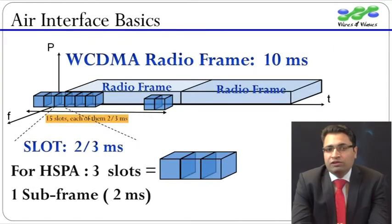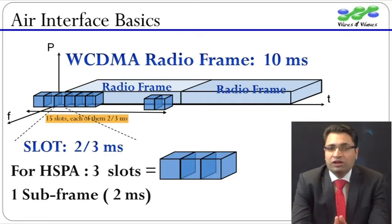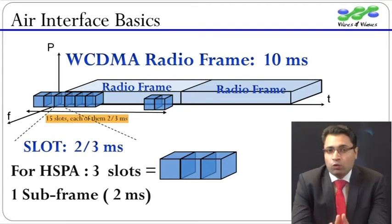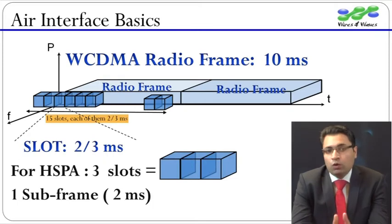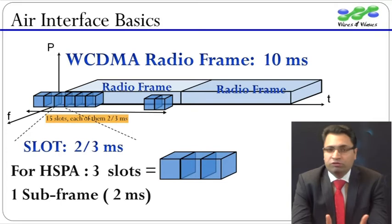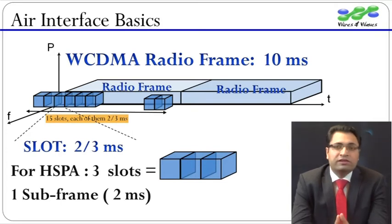In UMTS, everything is organized in 10 millisecond radio frames, and the radio frame is the smallest time duration for which radio resources can be allocated to a user. One radio frame is further divided into 15 slots, hence each slot equals 10/15 or 2/3 milliseconds. One slot is the duration after which layer 1 control information, for example a power control command, is signaled between UE and Node B.